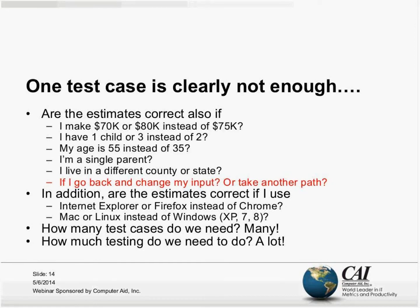Are the estimates correct if I make $70K or $80K instead of $75K? What if I have one child or three children instead of two? What if my age is 65 instead of 35? What if I'm a single parent? What if I live in a different county or state? And people change their minds — they might go back and change the inputs, or take a different path through the system. We want the system to always produce the same results. We actually heard of an Amazon example where it was possible to buy a product by taking one path and get one price, and take another path and get a different price. That's something you want to test for.